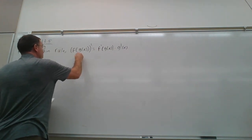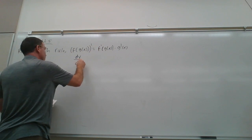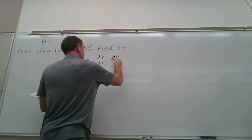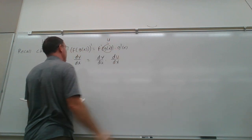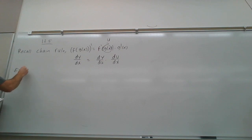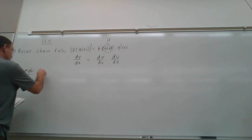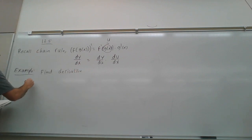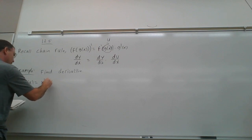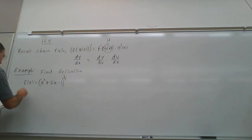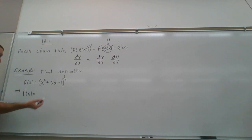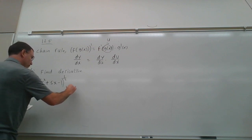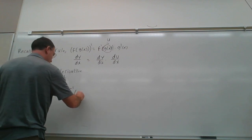Another way of writing this is dy/dx equals dy/du times du/dx, where du is g of x. For example, find the derivative of f(x) = (x² + 5x − 1)^(1/2). Using the chain rule, take the 1/2 out front, subtract 1 from the power, then multiply by the derivative of the inside: 2x + 5.